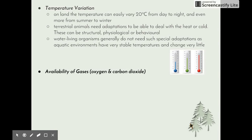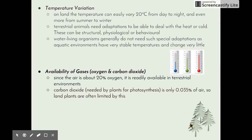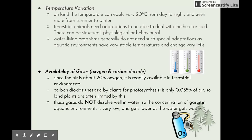Next is the availability of gases, particularly oxygen and carbon dioxide. Since air is about 20% oxygen, it is readily available in terrestrial environments. Carbon dioxide, needed by plants for photosynthesis, is only 0.035% of air, so land plants are often limited by it. These gases do not dissolve well in water, so gas concentrations in aquatic environments are very low and get lower as water warms. For this reason, fish gills must be highly efficient to extract the necessary oxygen — they are far better than our lungs for gas exchange.